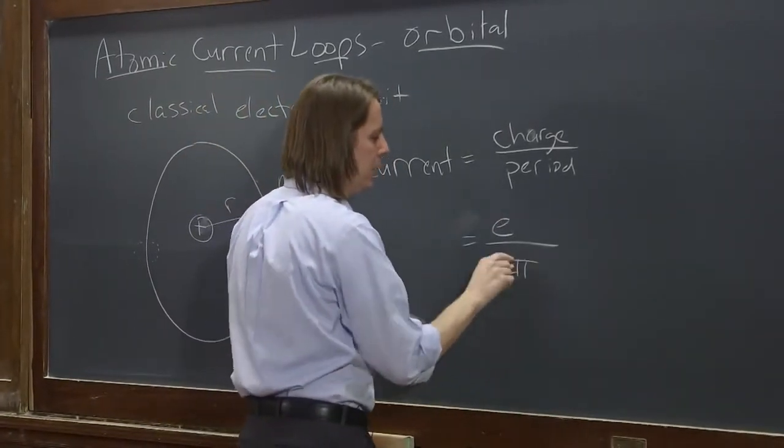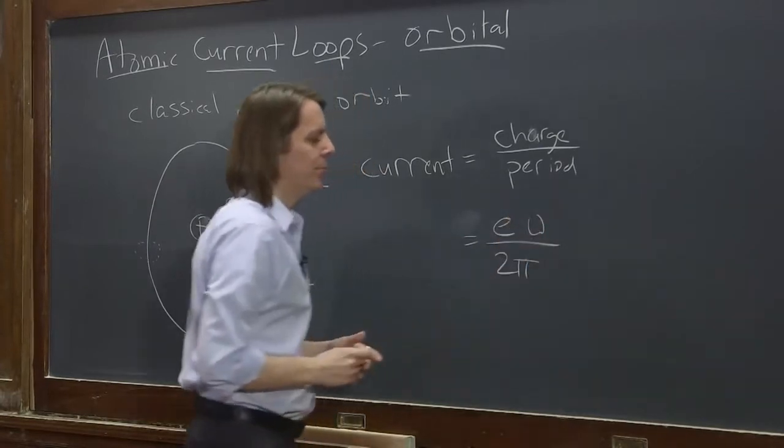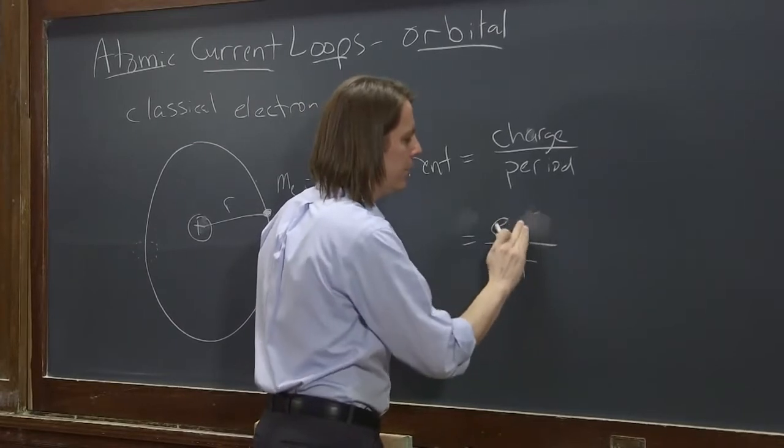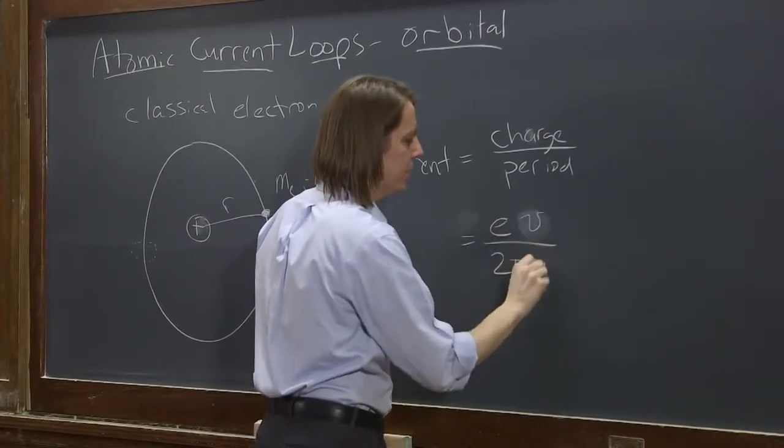So it would be 2 pi period down here over omega up here. But then omega is V, V over R. So I'll just go ahead and do all the algebra like that.